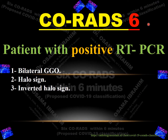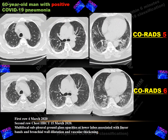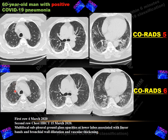Next is CO-RADS 6, which applies to patients confirmed with COVID-19 who are undergoing follow-up scans. A patient admitted on 4 March 2020 with multifocal ground glass opacity, subpleural and basal consolidations, subpleural lines, spider web sign, and vascular thickening — these are typical features, so CO-RADS 5 was classified initially. After the patient tested positive for COVID-19, a follow-up study on 15 March showed ground glass opacity and consolidation, which was then classified as CO-RADS 6 because the positive diagnosis was already confirmed.